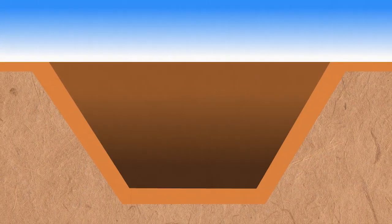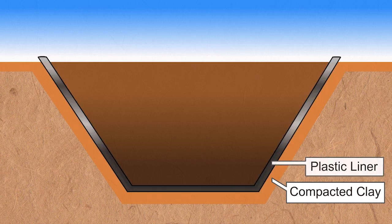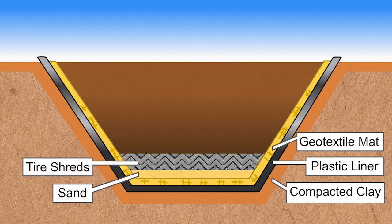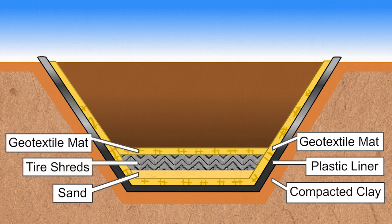Our landfill includes a layer of compacted clay, a plastic liner, and a geotextile mat. On top of these is a layer of sand, tire shreds, and another layer of geotextile mat. Then, your garbage is compacted on top.